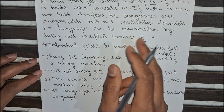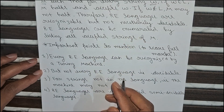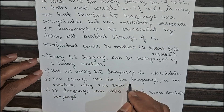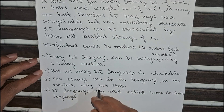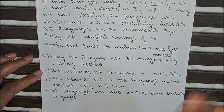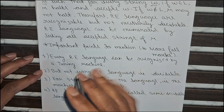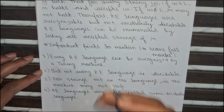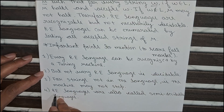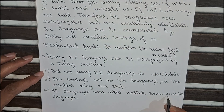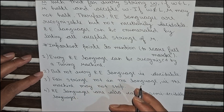The third point is: for strings not in the language, the machine may not stop — it will keep searching. The fourth point is: RE languages are also called semi-decidable languages because of this behavior.